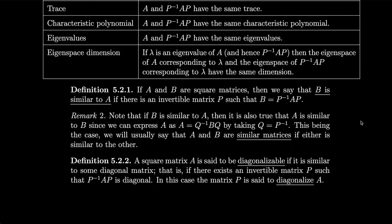Next, we have some definitions. If A and B are square matrices, we say that B is similar to A if there is an invertible matrix P such that B equals P inverse AP. Note that if B is similar to A, then it is also true that A is similar to B, since we can express A as Q inverse BQ by taking Q to be P inverse. So we will usually say that A and B are similar matrices if either is similar to the other. A square matrix A is said to be diagonalizable if it is similar to some diagonal matrix — that is, if there exists an invertible matrix P such that P inverse AP is diagonal. In this case, the matrix P is said to diagonalize A.